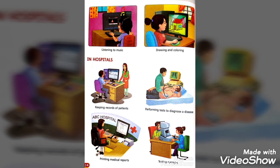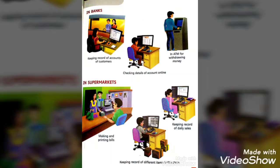The fourth use in hospitals is testing eyesight — apni aankhon ki jaanch karne ke liye, us ka parikshan karne ke liye, computer ka istamal kiya jaata hai. Now the third place where we use computers is in banks.